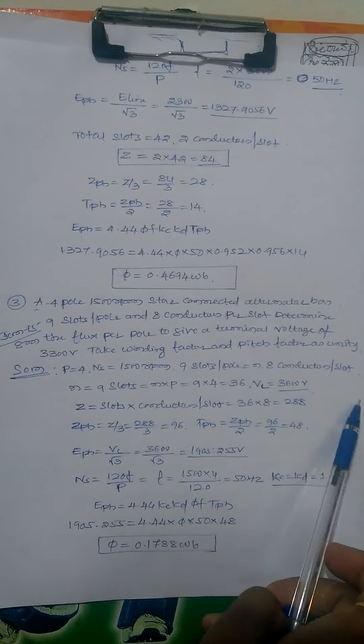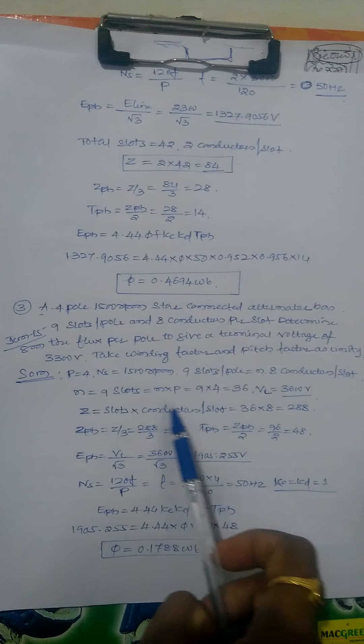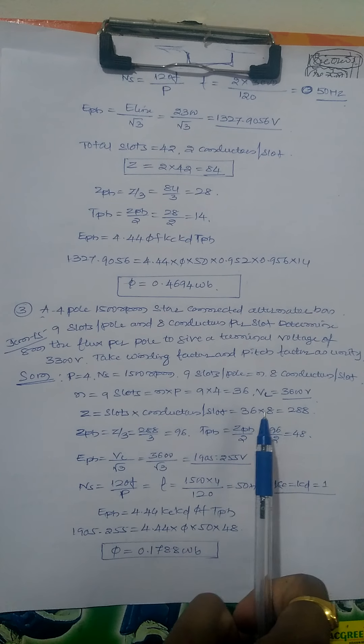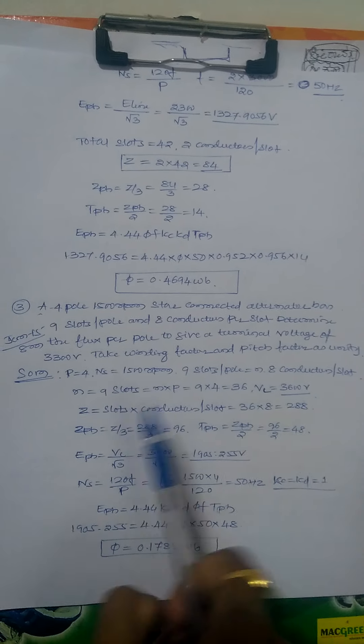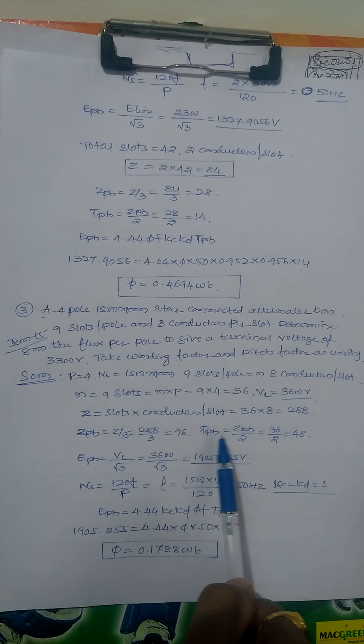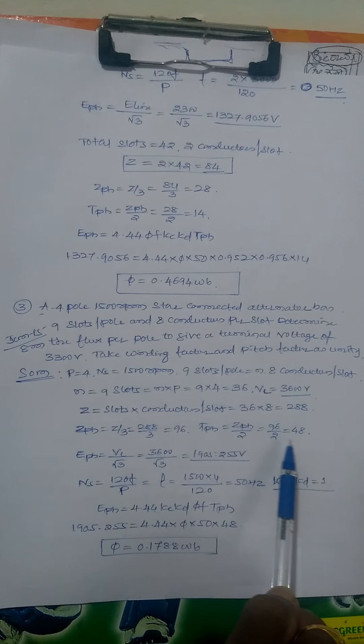Given: P equals 4, 1500 rpm, 9 slots per pole, 8 conductors per slot. Z equals slots into conductors: 9 into 4 equals 36 slots, 36 into 8 equals 288 conductors. Z phase equals Z by 3: 288 by 3 equals 96. T phase equals Z phase by 2: 96 by 2 equals 48.